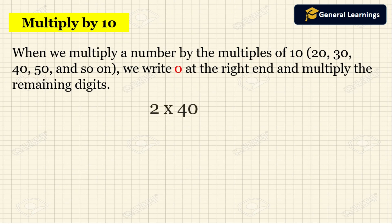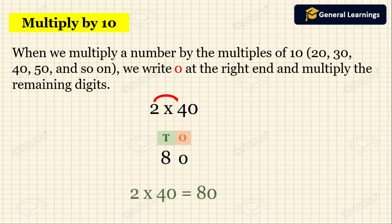Let us take one example. They have given 2 into 40. While multiplying 40 by a one-digit number, first write zero on the right end, that is in the ones place, because 40 has one zero. Then multiply 2 by 4. So 2 fours are 8. That 8 should be written in the tens place. So 2 into 40 equal to 80.